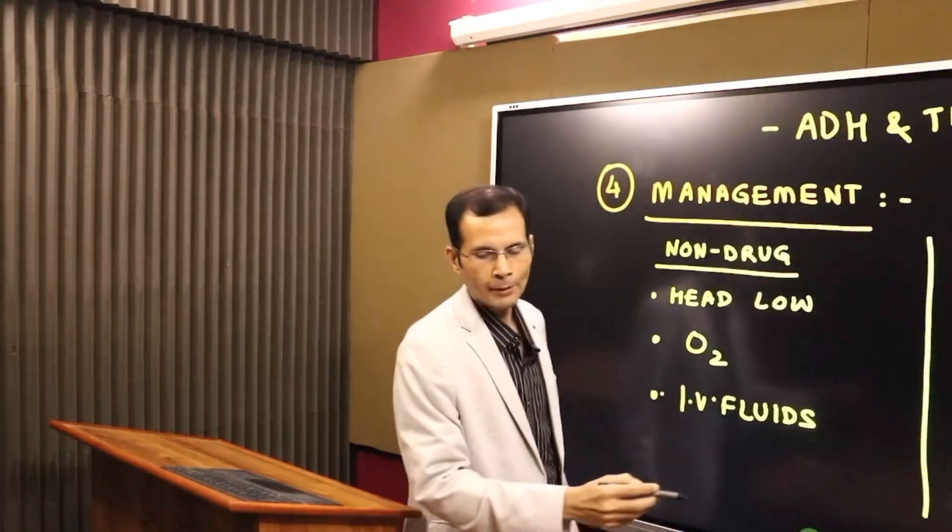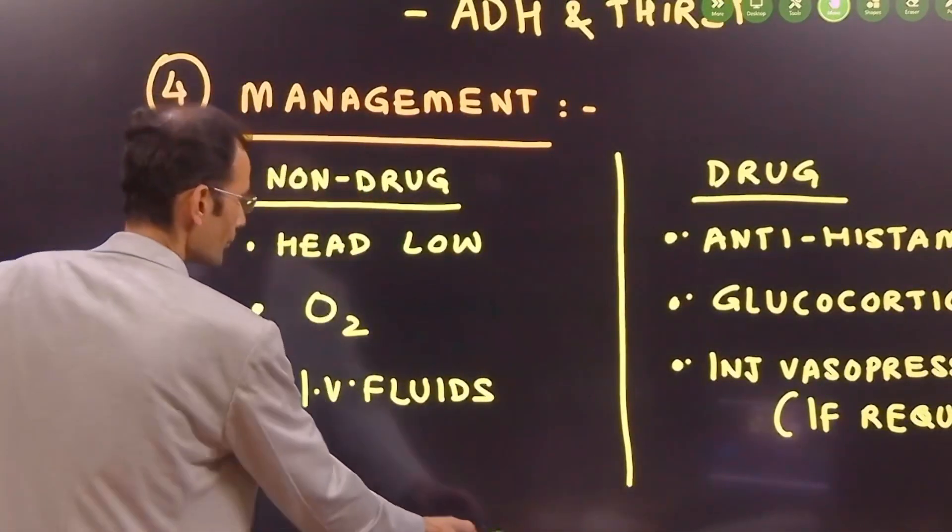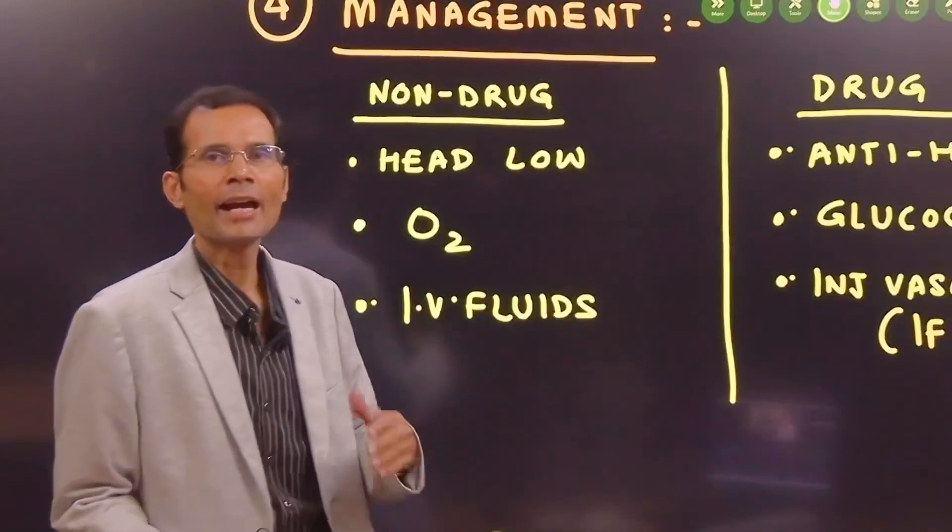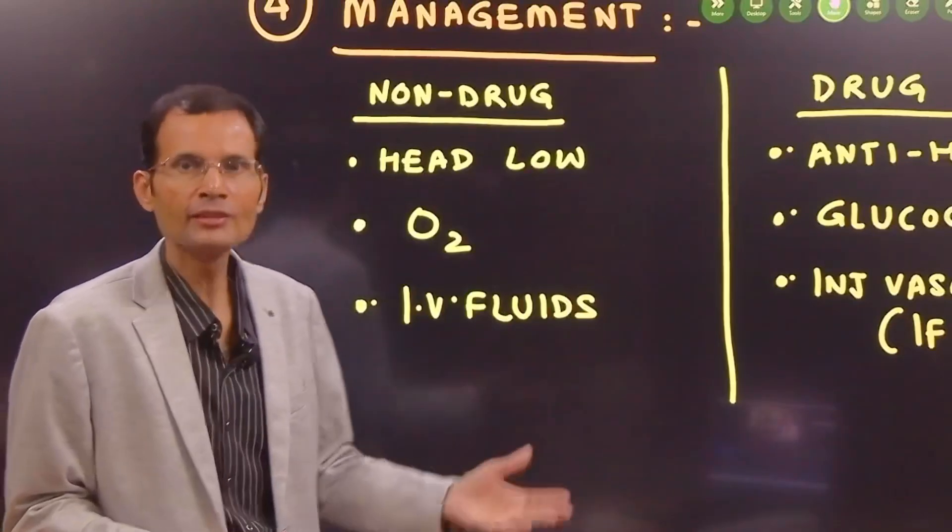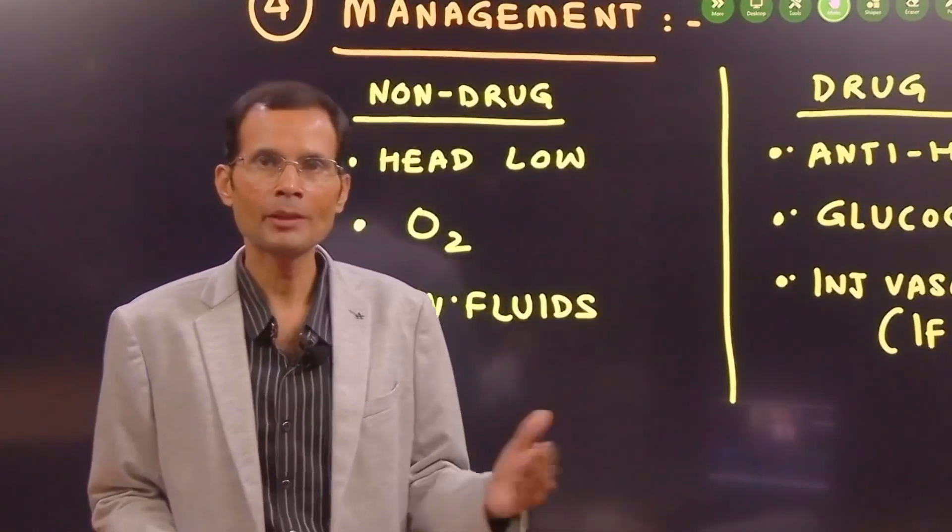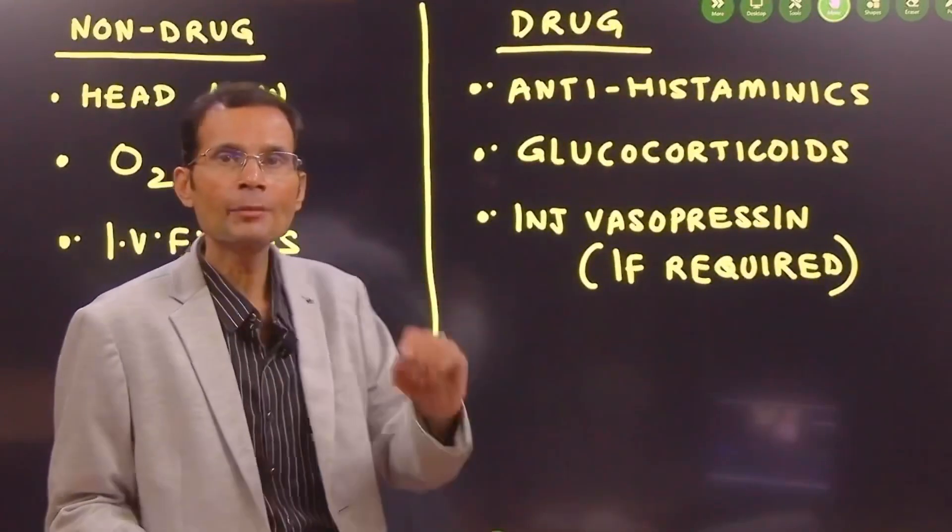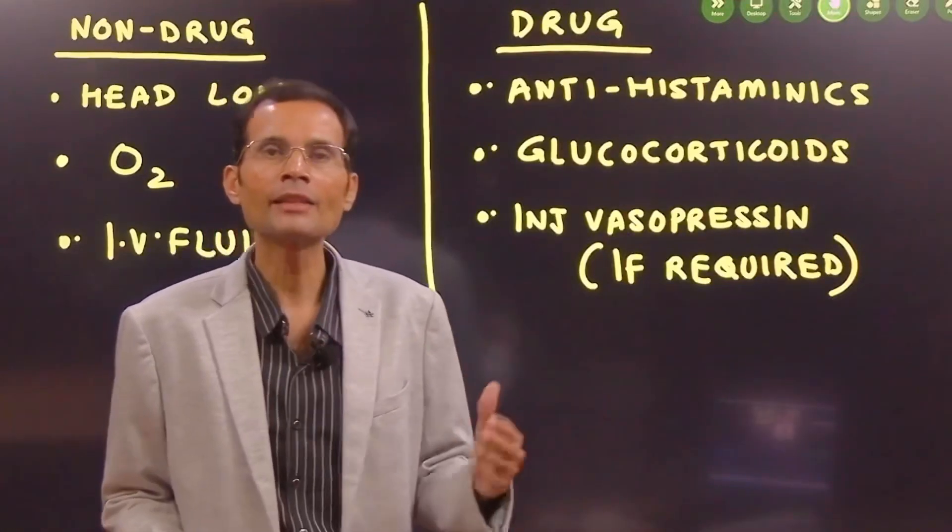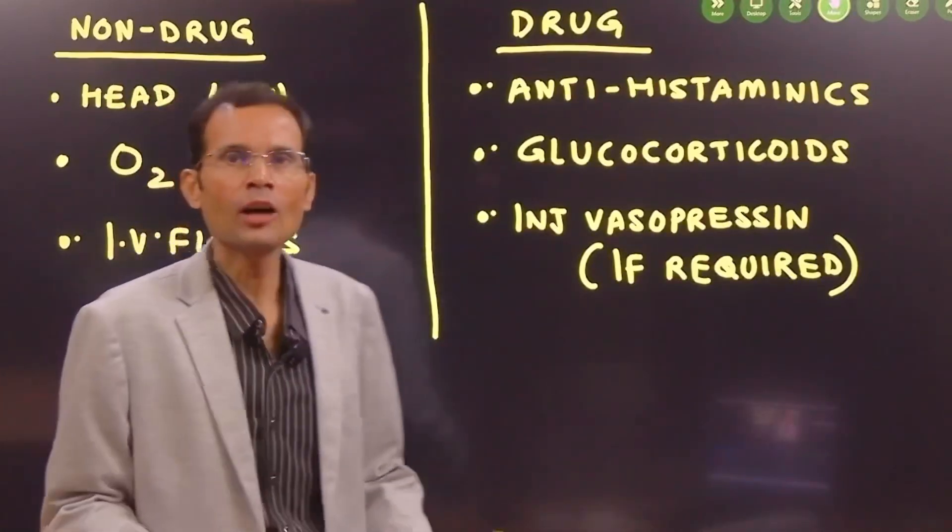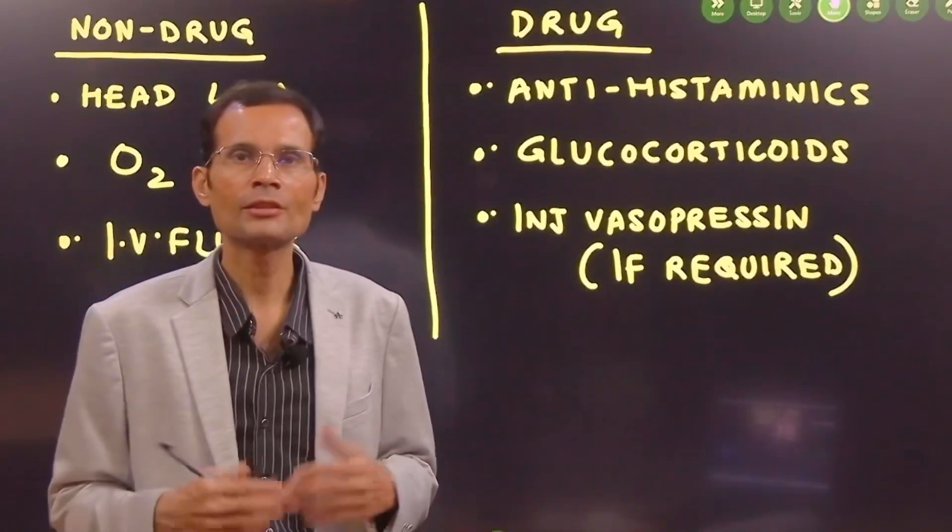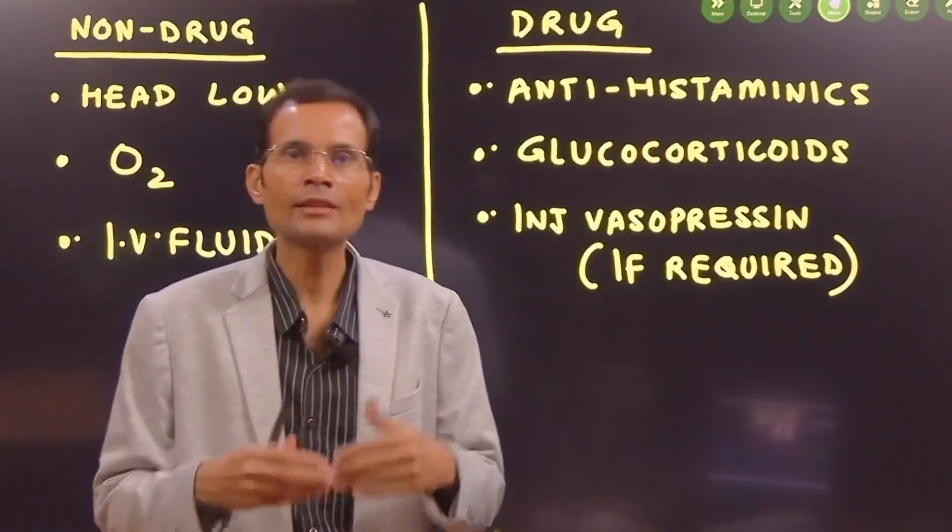First stage of circulatory shock, particularly baro and chemoreceptor mechanisms. The fourth question was management of the condition. How would you manage circulatory shock? Obviously, non-drug treatment like head-low position, giving oxygen by mask, intravenous fluids so that blood volume will increase and blood pressure will come up. And the drug treatment.